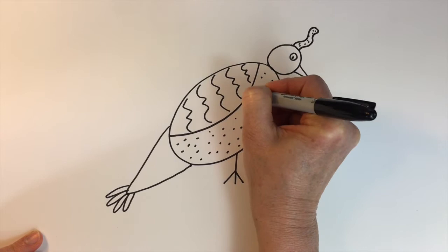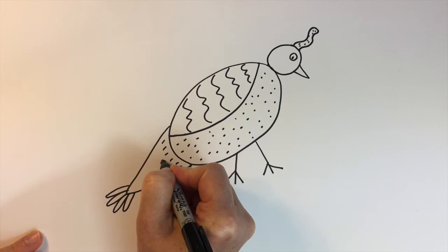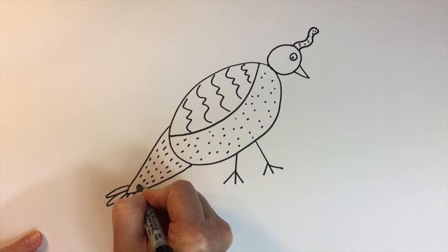And I'll have some different markings back here on his tail just to add some variety. And maybe I'll color in those little curves back here.